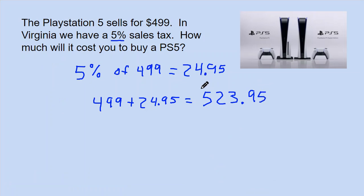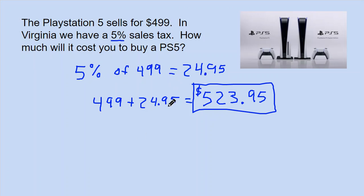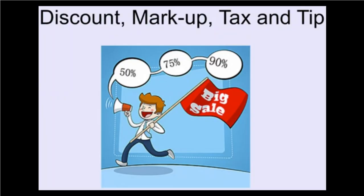If you went to the store and bought a PlayStation 5 in Virginia, that is how much it would cost you. Tip is done the exact same way as markup and sales tax: find the percent of the original number and then add it to the original price. That's how we do discount, markup, tax, and tip. If you ever have any questions, please ask a teacher. Have a great day.